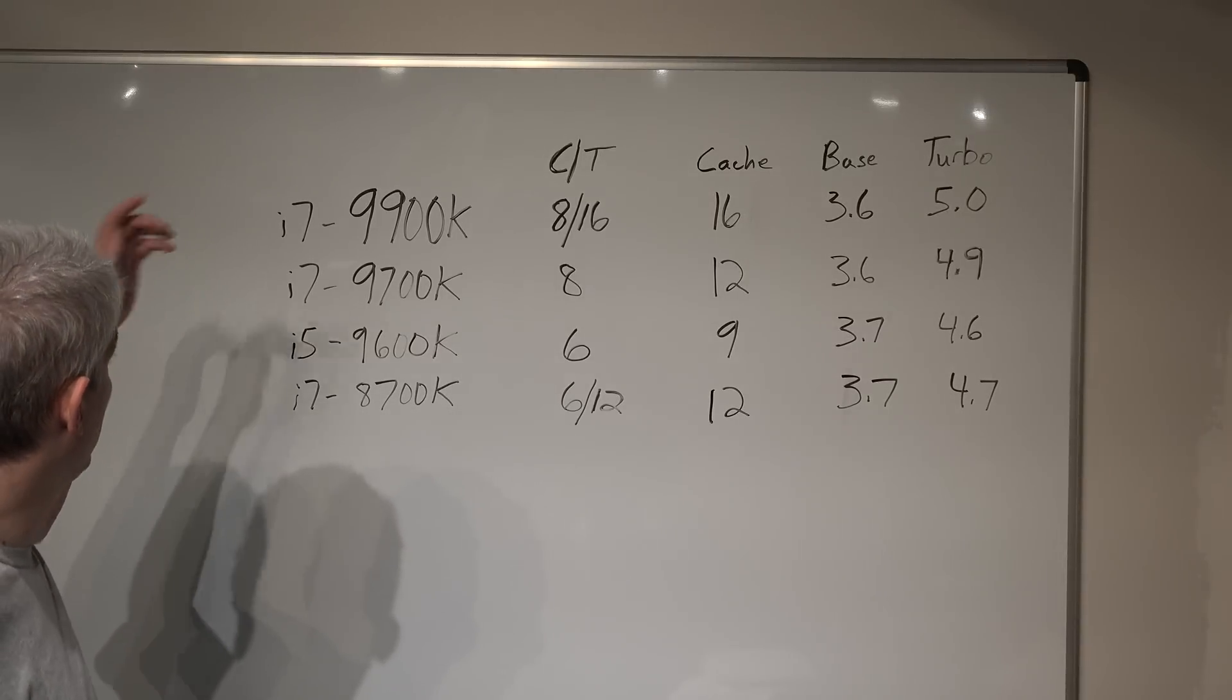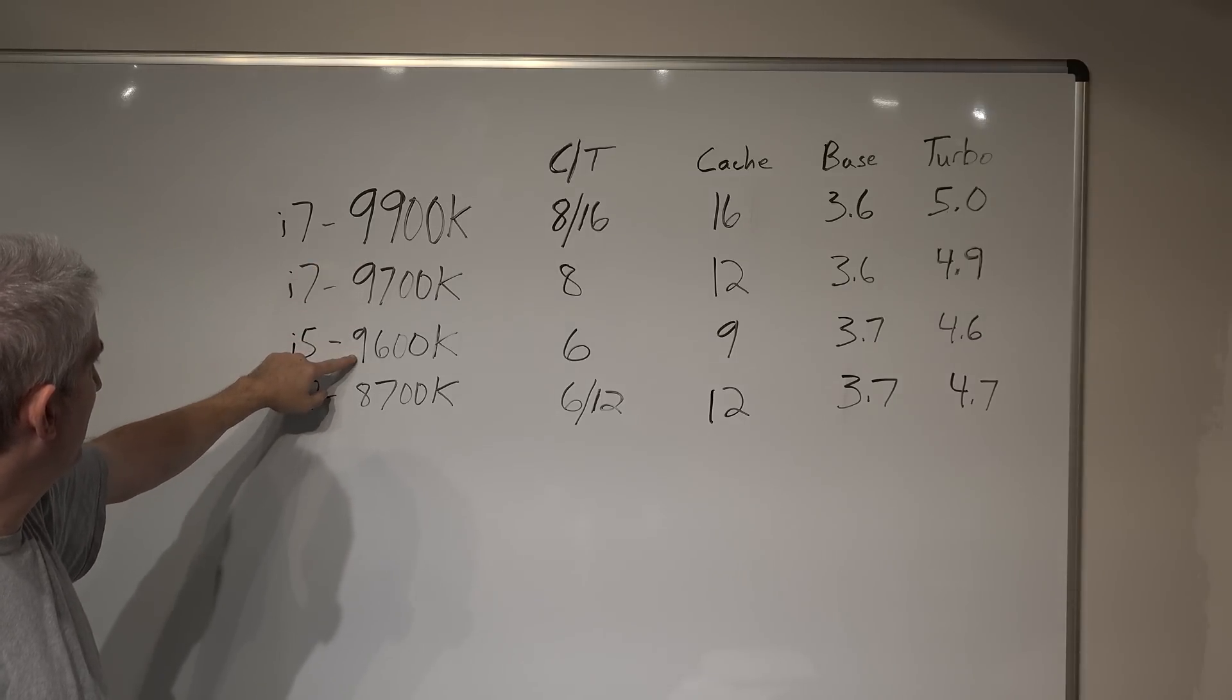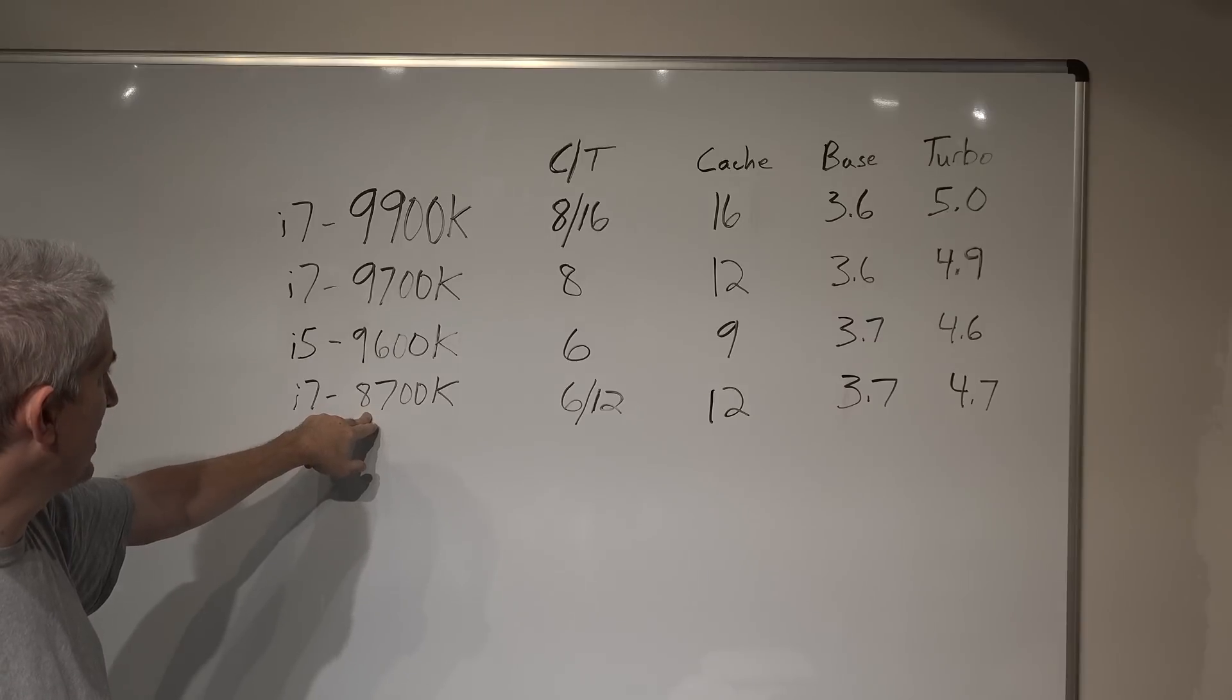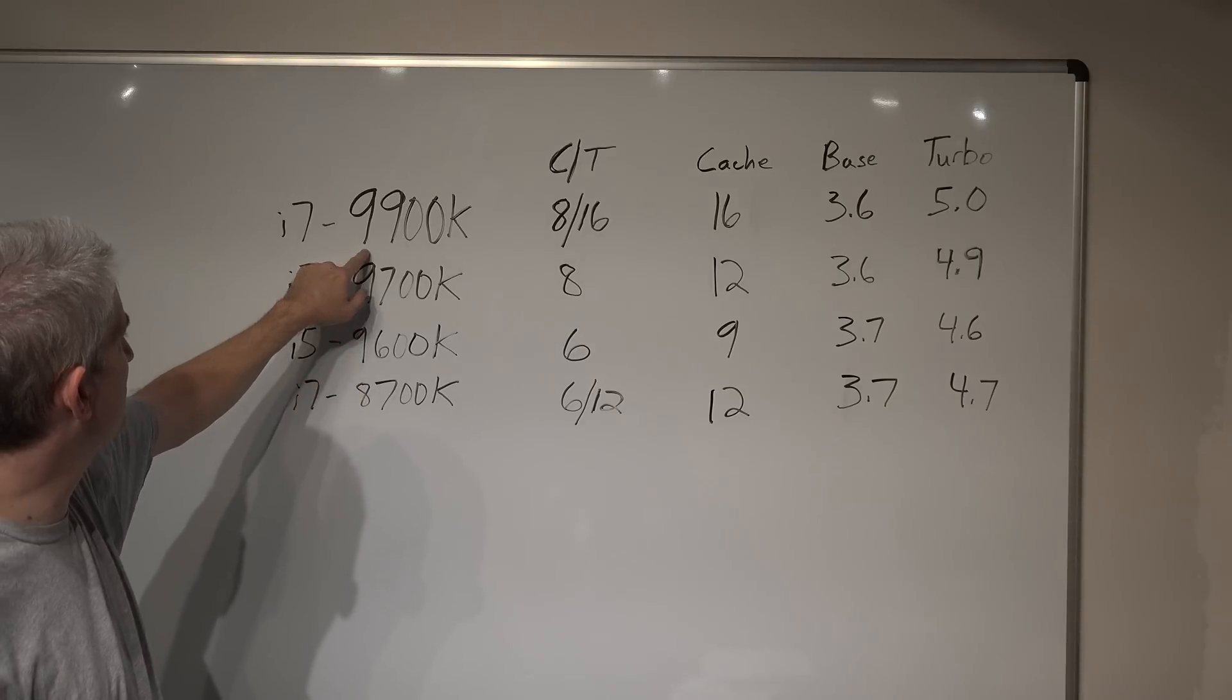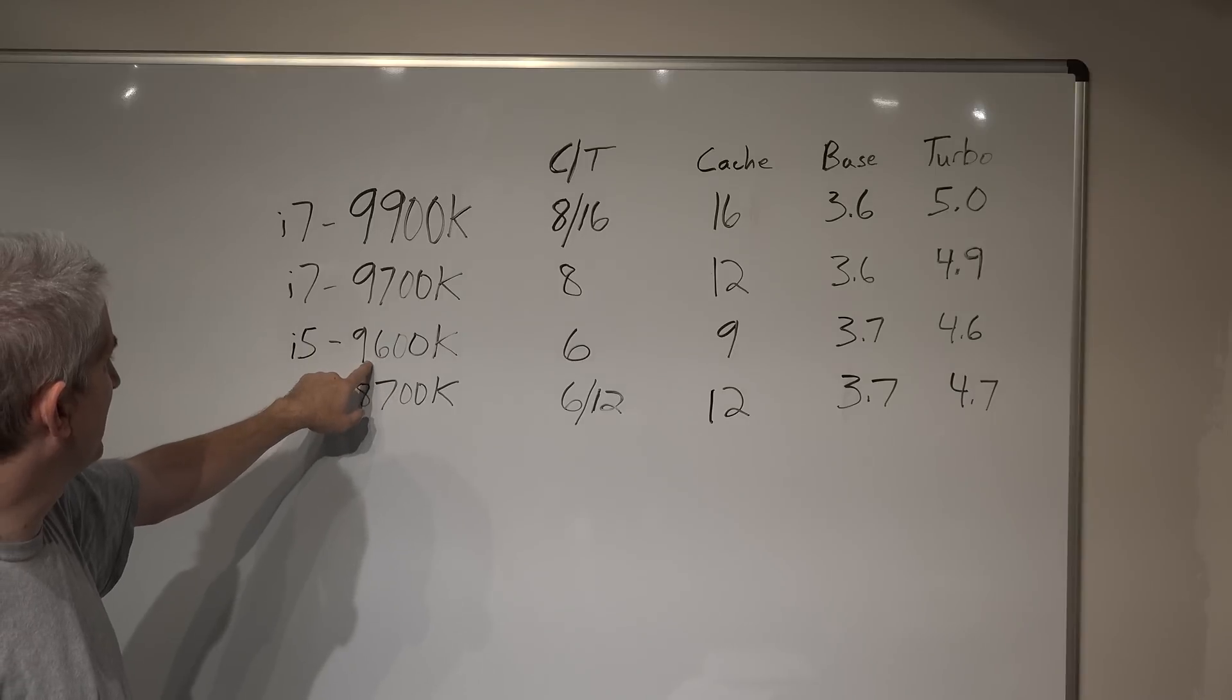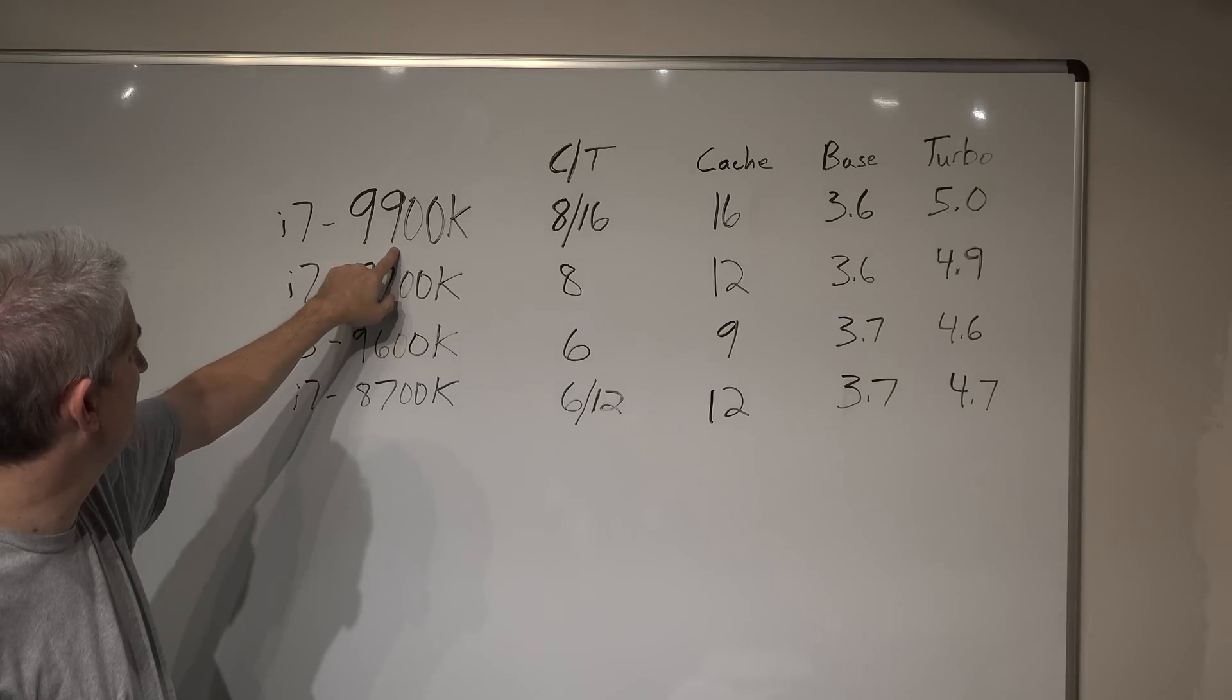The first thing we want to talk about is the model numbers. So we have the 9900K, 9700K, 9600K, and 8700K. The 8700K has been out for a while and that's been the fastest gaming processor for a while. You can tell what generation a processor is by the very first number in the naming convention. This is 8th generation, anything that starts with a 9 is 9th generation. The second number indicates how fast it is within that generation.